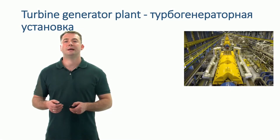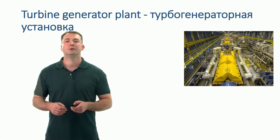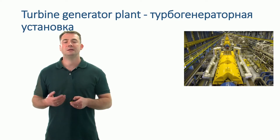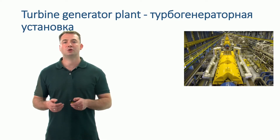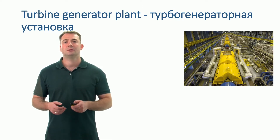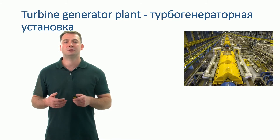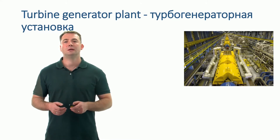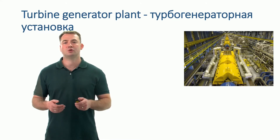Turbine Generator Plant. The turbine generator plant is intended to convert potential energy of steam, compressed and heated up to saturation, into kinetic rotating energy of the turbine rotor.